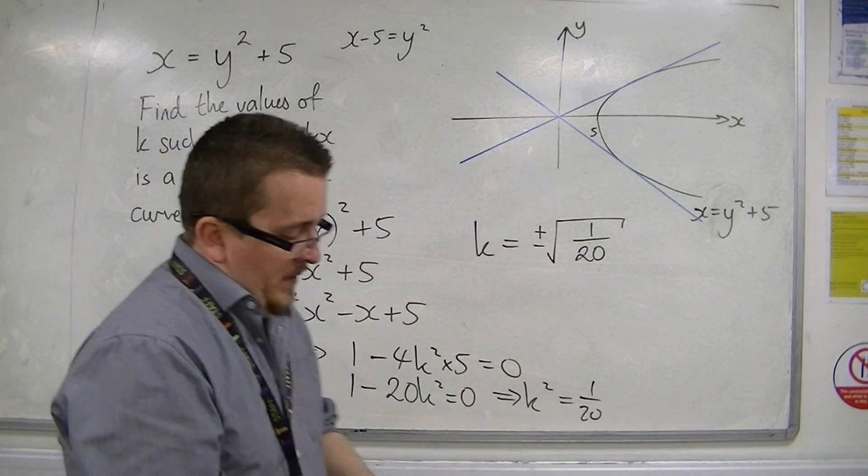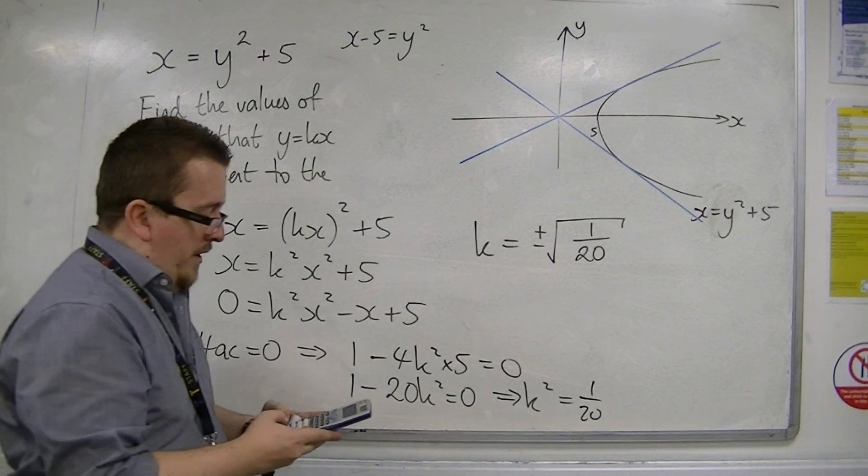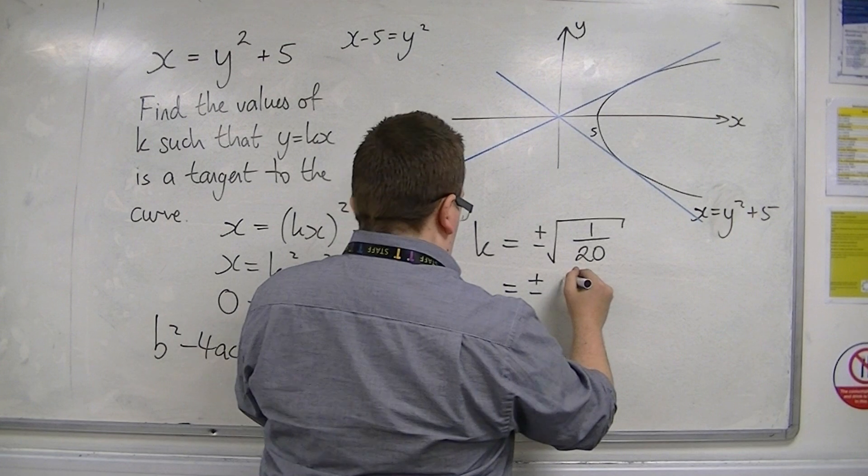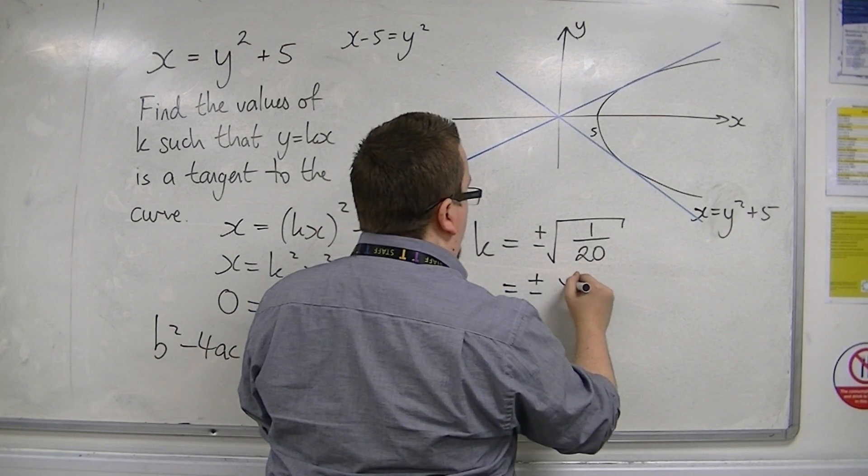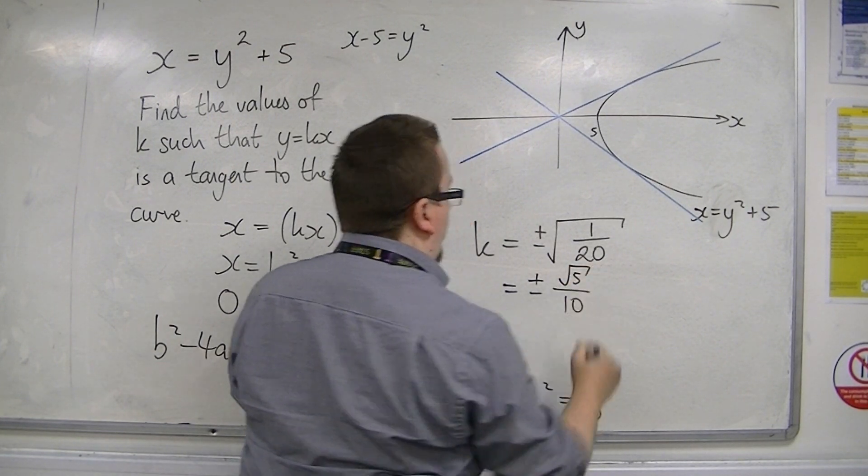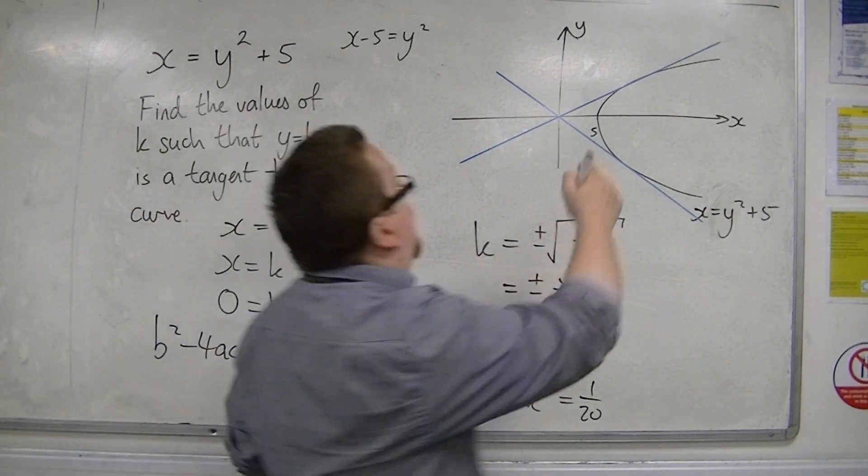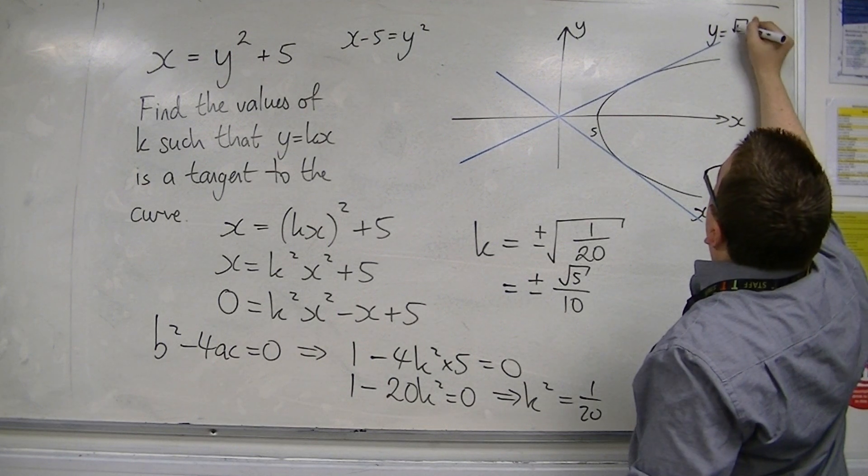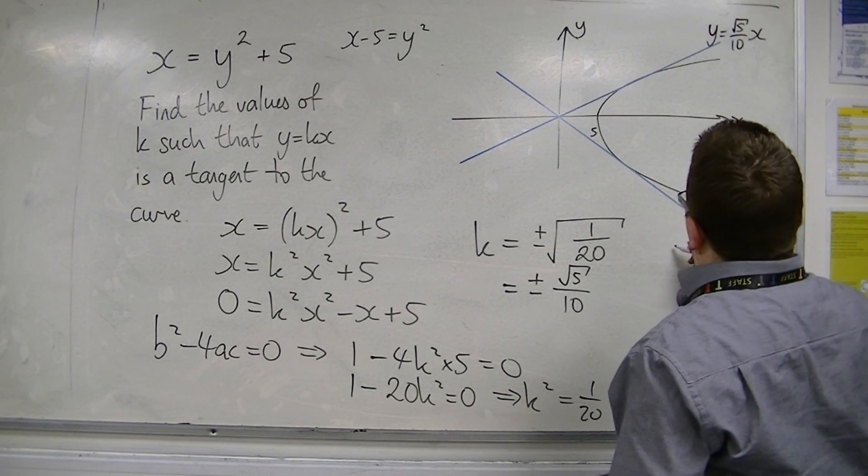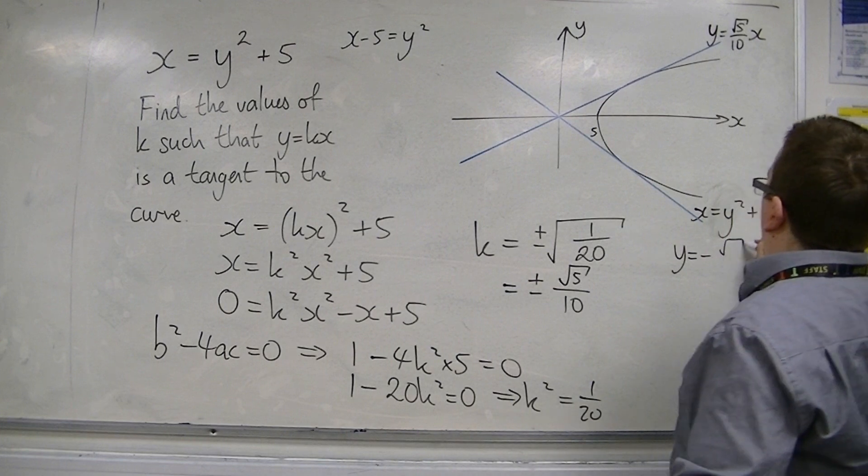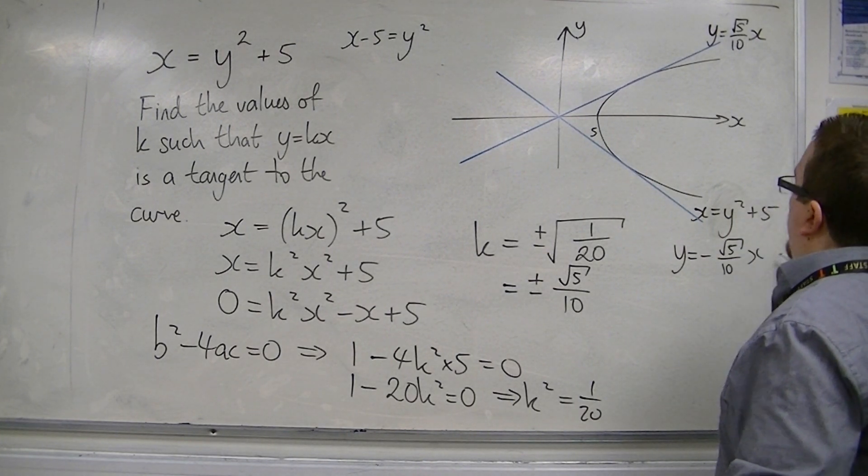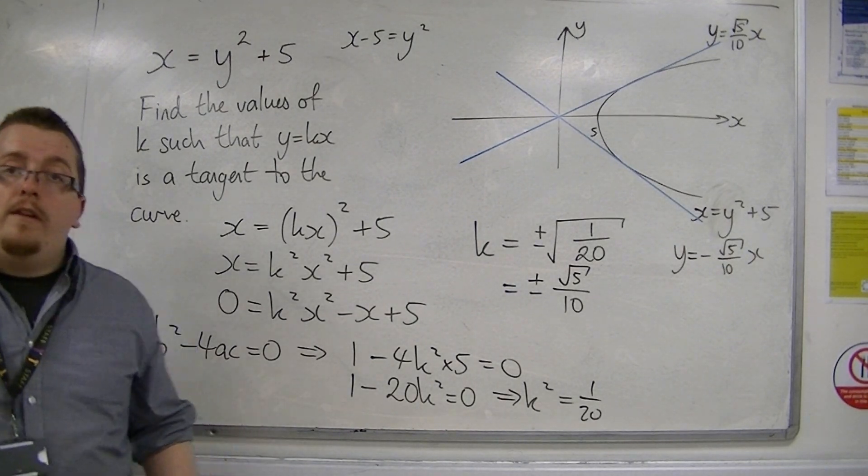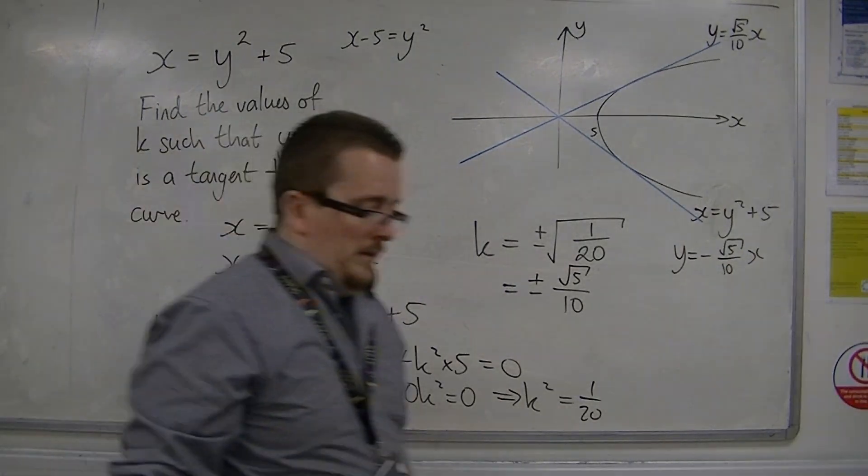Now, the calculator can rationalise the denominator for us. So this is plus or minus root 5 over 10. So that means that this equation is y is equal to root 5 over 10x. And this equation is y is equal to minus root 5 over 10x. And that's how we can work out the equations of those lines.